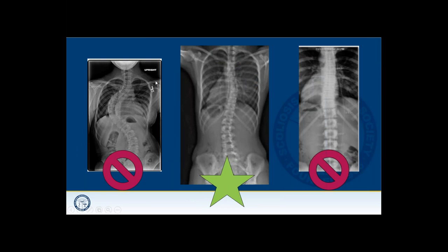Looking at who might need a brace: the x-ray on the left shows a patient with a fairly severe curvature — a candidate for an operation, too big for a brace. The patient on the right has a very mild curvature — not severe enough to consider a brace. The one in the middle is still growing with a mild to moderate curve — ideally suited for brace treatment.